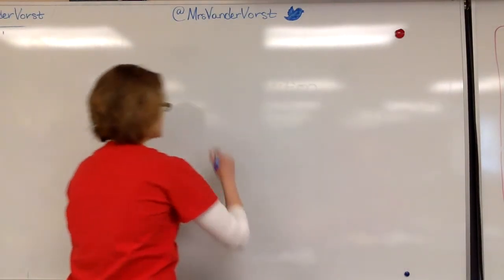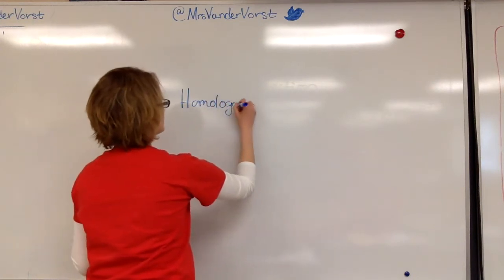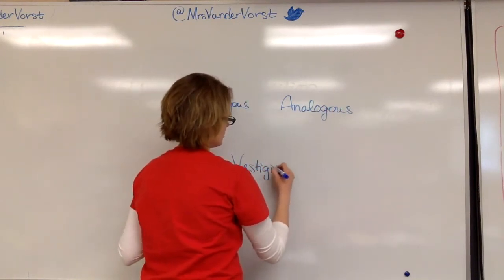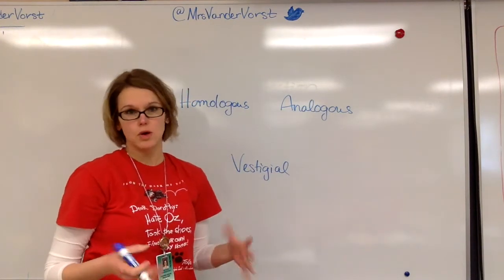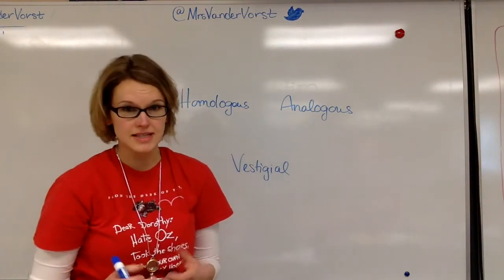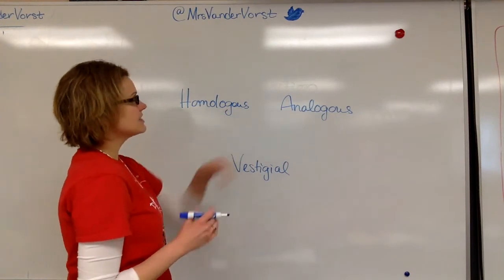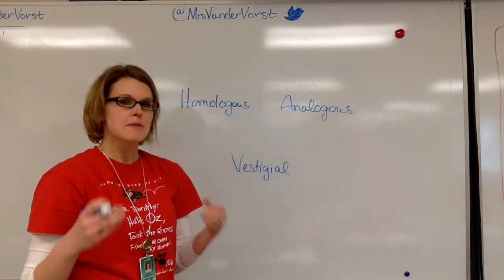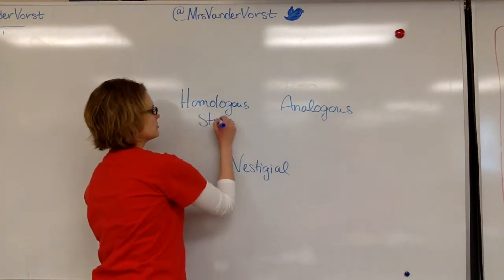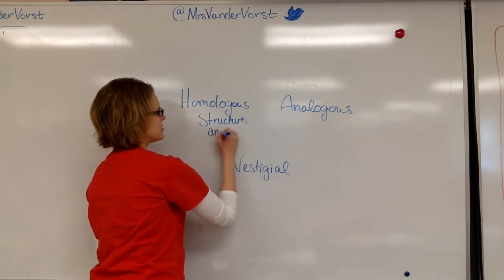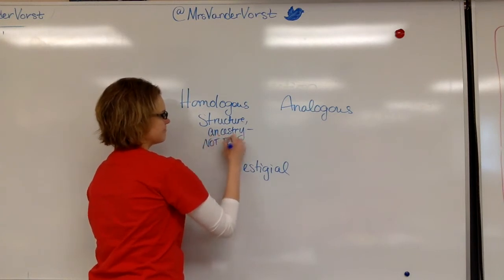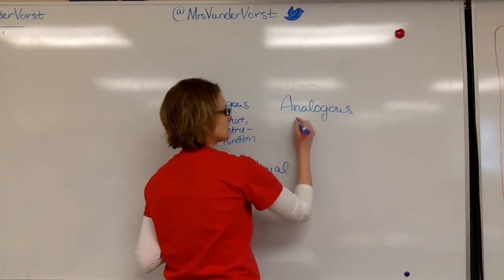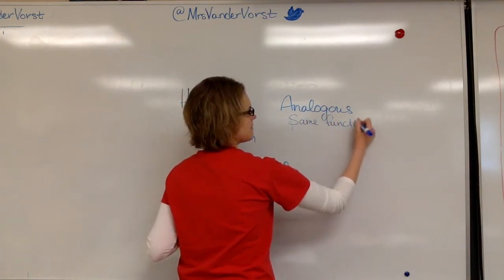We have two different types of structures: homologous structures and analogous structures. We also have vestigial structures — things we do not use anymore, like the human tailbone. We have no use for it; it's left over, a remnant from development. Homologous structures have similar ancestry and similar structure, but not the same function. Analogous structures, on the other hand, have the same function but not the same ancestry.